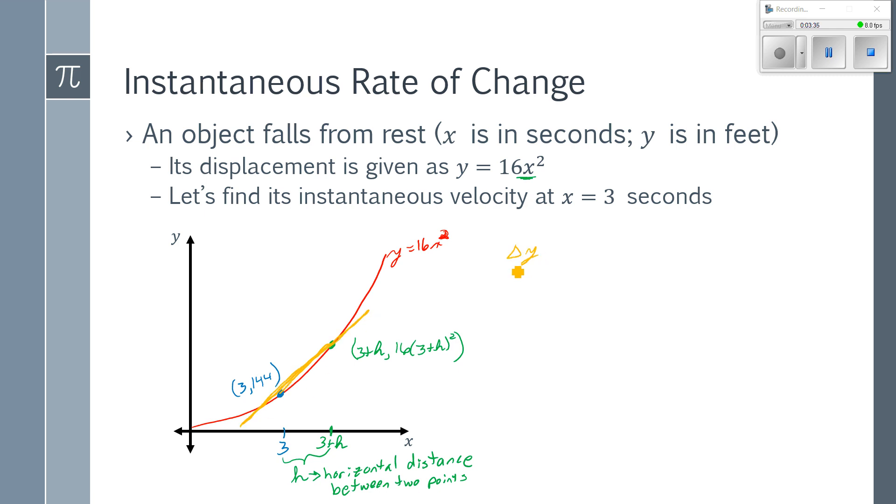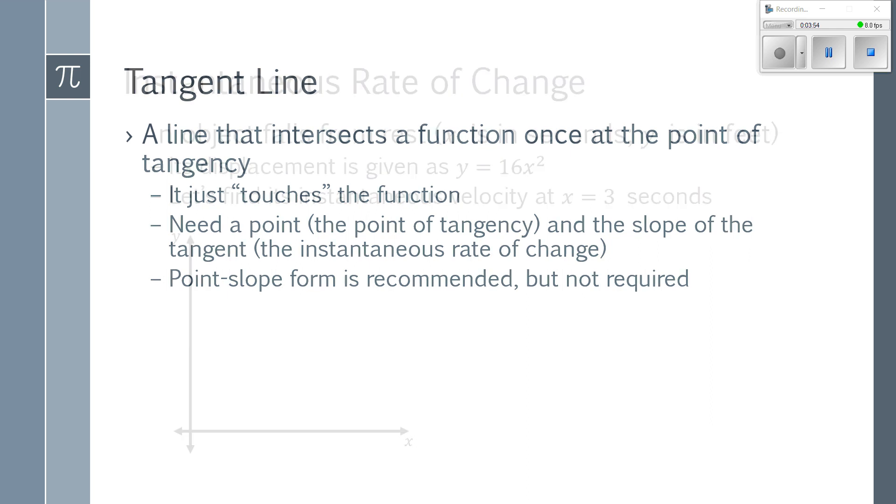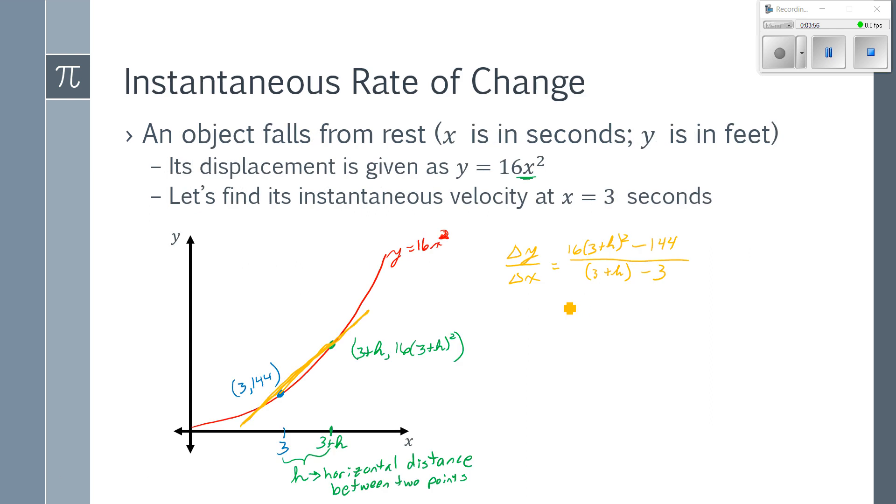So, if I do change in y over change in x, I have the 16 times the quantity 3 plus h squared. And if I go through, and simplify this, I have 16 times 9 plus 6h plus h squared. If I FOIL out, minus the 144.